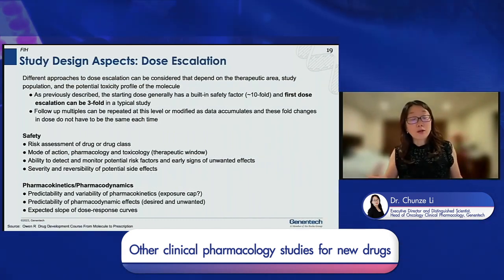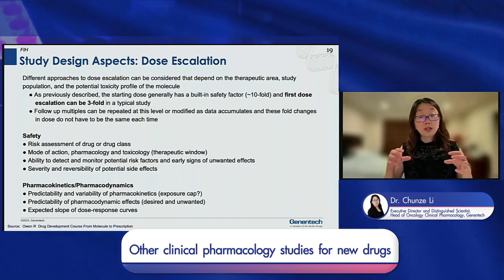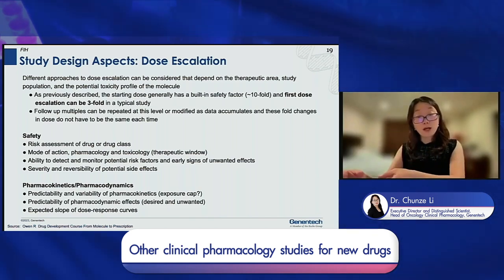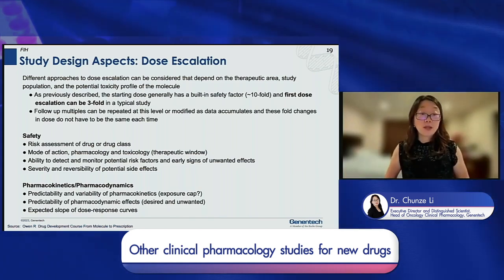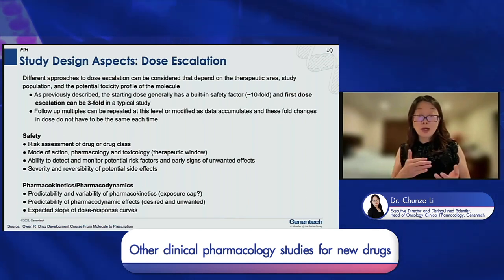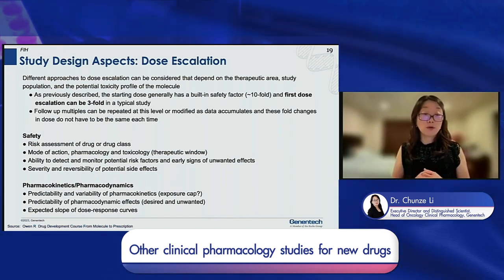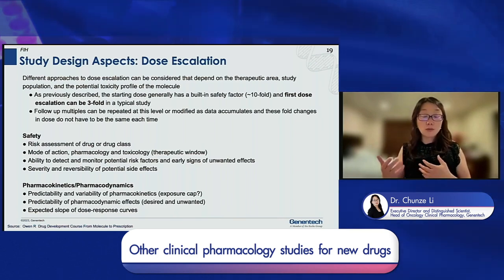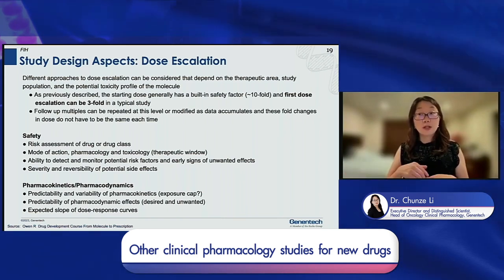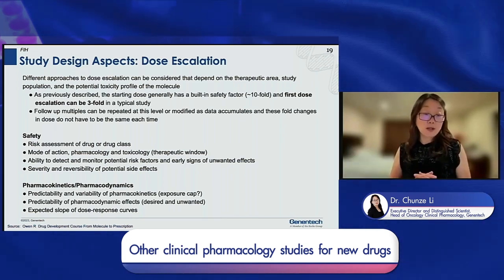Moving on to dose escalation: how aggressive you go depends on understanding where your starting dose, target dose, and cap are. Starting dose usually has a built-in tenfold safety factor, so for the first couple of dose levels we can typically do threefold escalation. As we accumulate data and see some safety signals — not necessarily strong ones — we can slow down: reducing from threefold to twofold, even 1.5-fold or 50%. It depends on the safety observed.